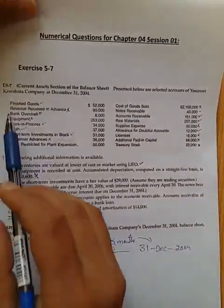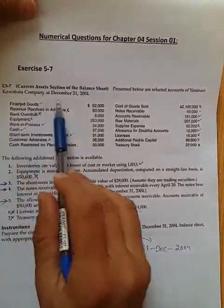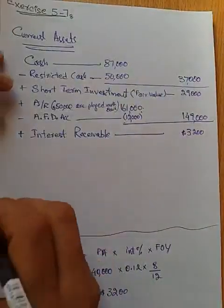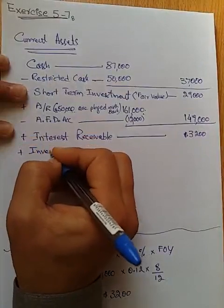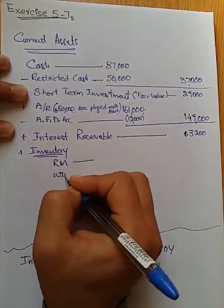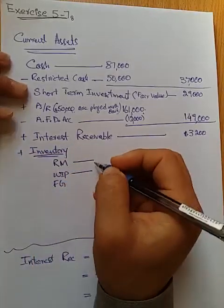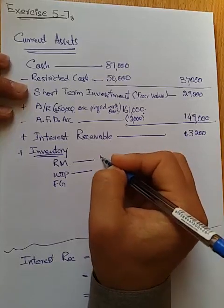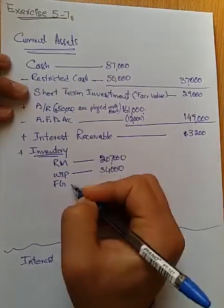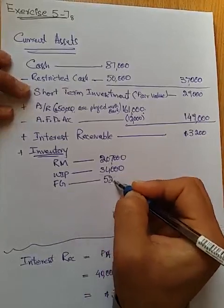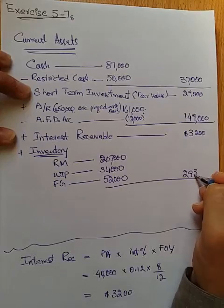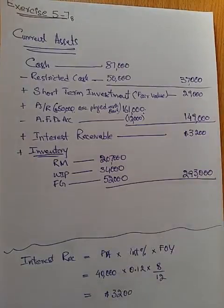After interest receivable we look at inventories. We have finished goods of $52,000, work in process of $34,000, and raw material of $207,000. Adding them all together: raw material $207,000 + work in process $34,000 + finished goods $52,000 = $293,000 total inventory value.